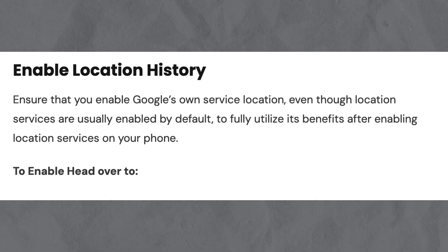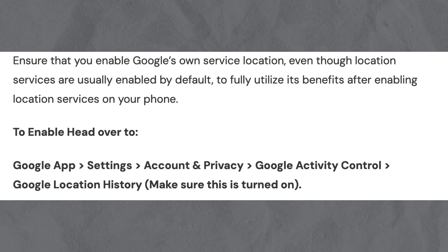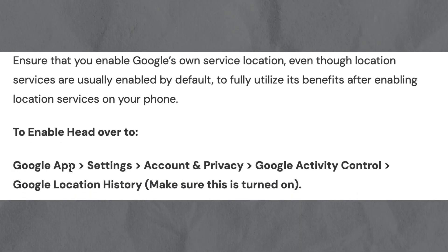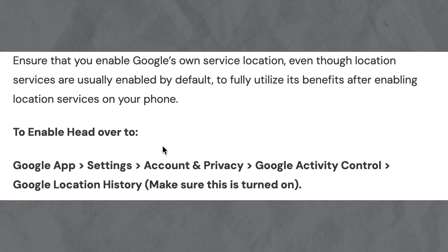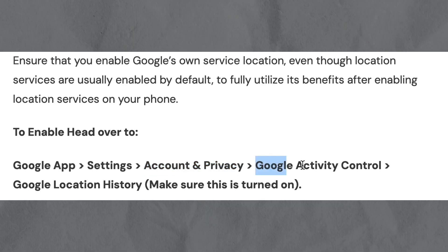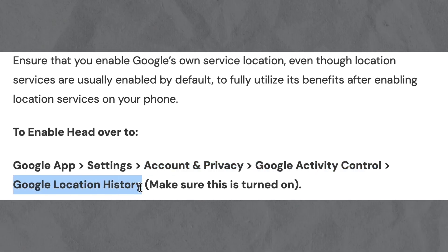To actually enable this, here's what you need to do. Go to the Google app, website, or browser. Then go to your account settings. Once you're in your account settings, go to Account and Privacy and click on Google Activity Controls. Then go to Google Location History and make sure that it is toggled on.